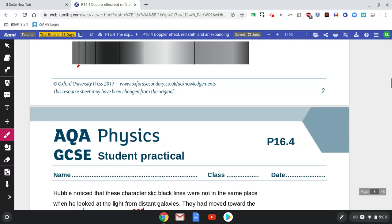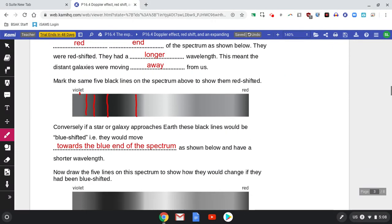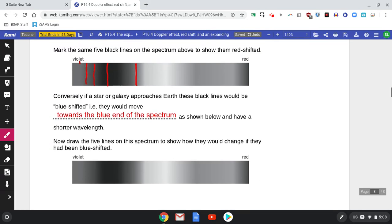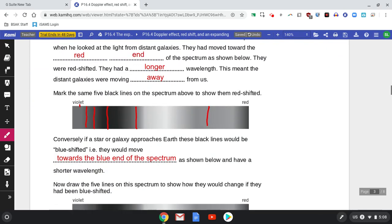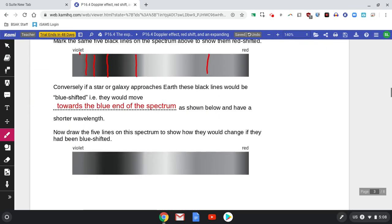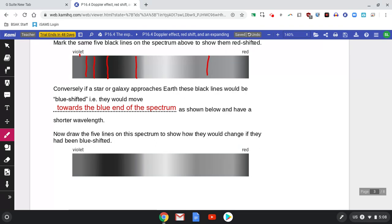All towards the red end of the spectrum, and then finally this one here is going to be shifted as well. So it's the same spectral signature, the same combination of lines, but they are all shifted towards the red end of the spectrum. So that's red shift.